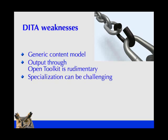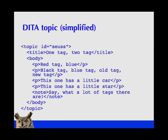What DITA doesn't do so well is provide you with a very specific kind of content model. The output you get through the Open Toolkit — rudimentary is a polite word — is not attractive. The Open Toolkit itself is really quite difficult to customize, so if you don't like the output you're getting, you're going to have some costs associated with building through the Open Toolkit. Specialization — the process of customizing the content model to your requirements — can be really extremely challenging, so if you're going to need to specialize, you're going to have some issues there.